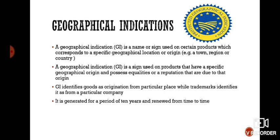Geographical Indications: a geographical indication is a name or sign used on a certain product which corresponds to a specific geographical location or origin — for example, a town, region, or country. A geographical indication is a sign used on a product that has a specific geographical origin and possesses qualities or a reputation due to that origin. Geographical indication identifies goods as originating from a particular place, while a trademark identifies them as from a particular company. It is registered for a period of 10 years and renewed from time to time.